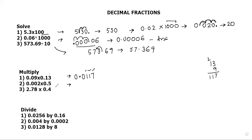Let's do one more. Focus on the numbers: 5 × 2 = 10. Write 10. Now see where the decimal is in both numbers — one place on the left for one number, and three places for the other. So 1 + 3 = 4. Count 1, 2, 3, 4 and put the decimal. The answer is 0.0010.